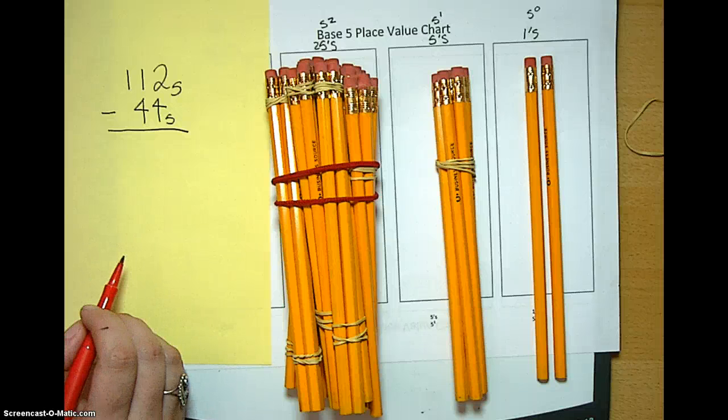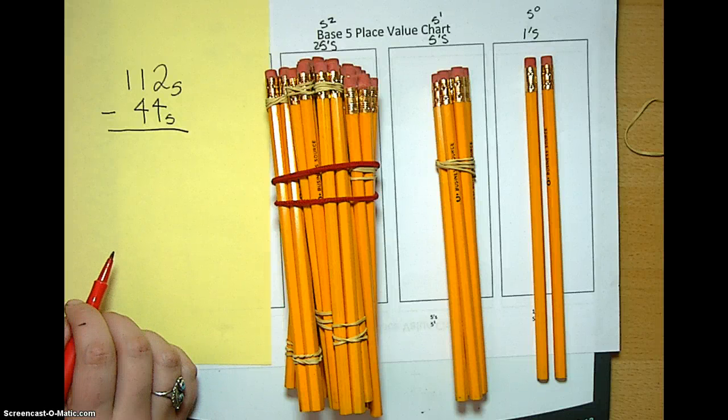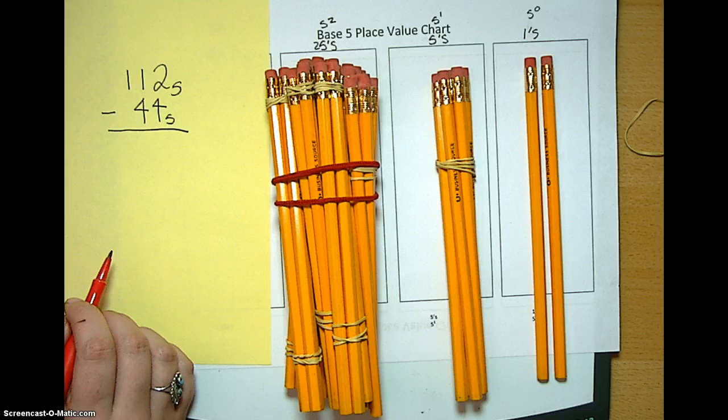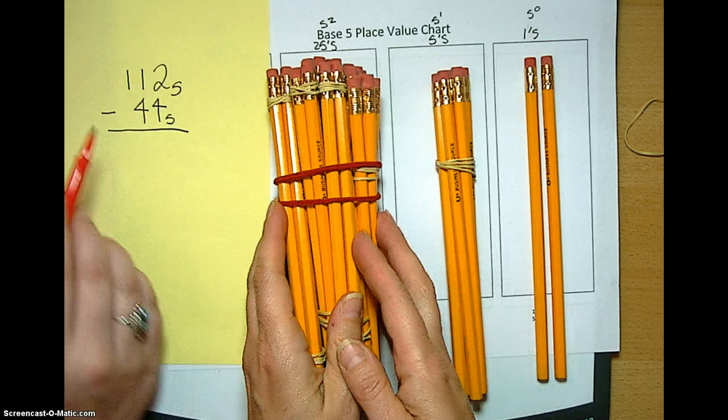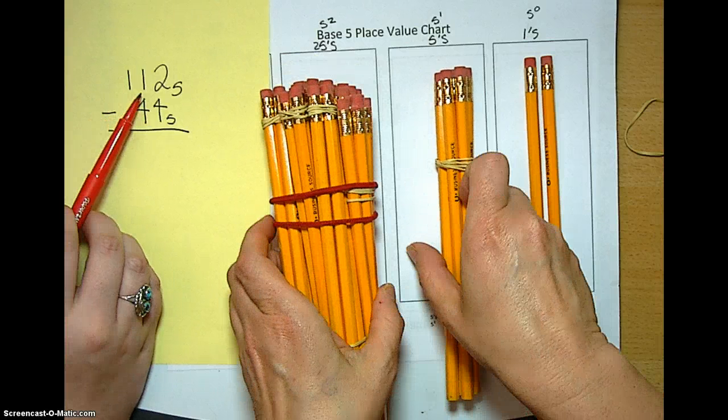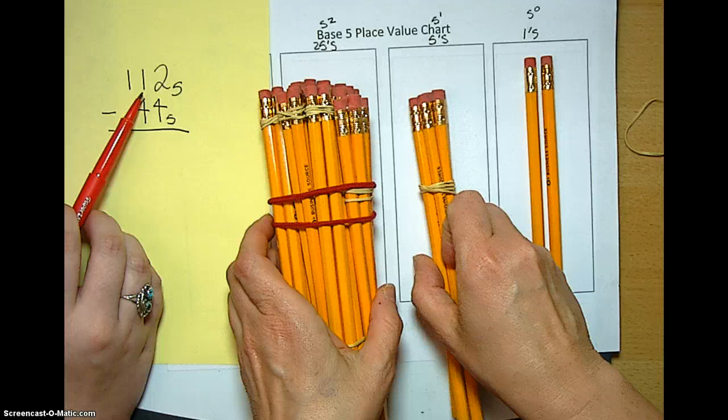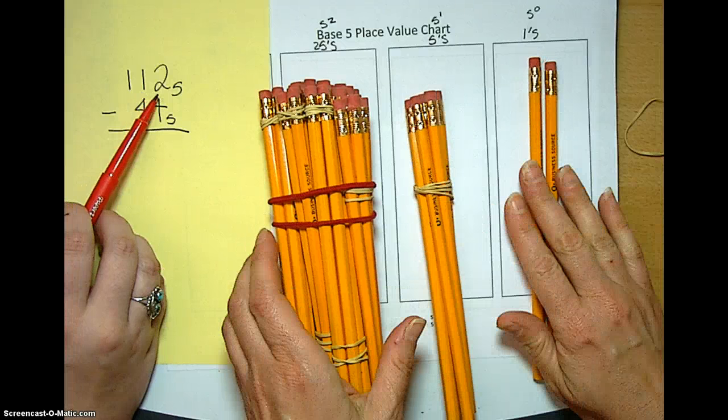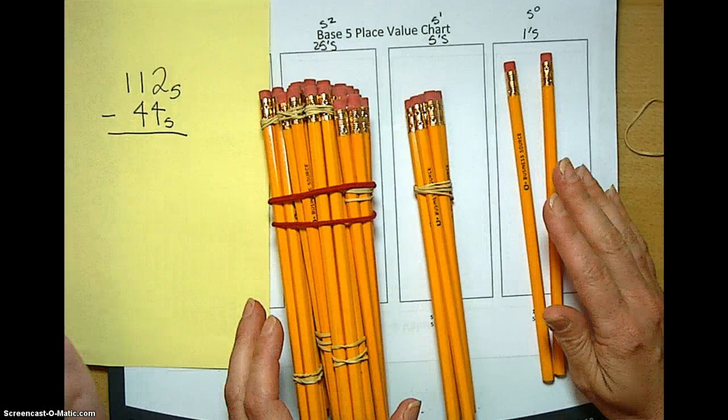We're going to do some base 5 subtraction with unbundling. We're taking one bundle of 25s, or five 5s, one bundle of 5, and two singles. And we're going to take away 4, 4 base 5.